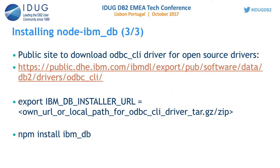Another environment variable is IBM_DB_INSTALLER_URL. Sometimes customers say their system is isolated and cannot access the internet from their server. To overcome this, you can download the ODBC CLI driver locally, set this environment variable to point to that tar.gz or zip file, and then run npm install ibm_db. It will pick up the tar.gz from the local location and use it instead of downloading from the IBM site.